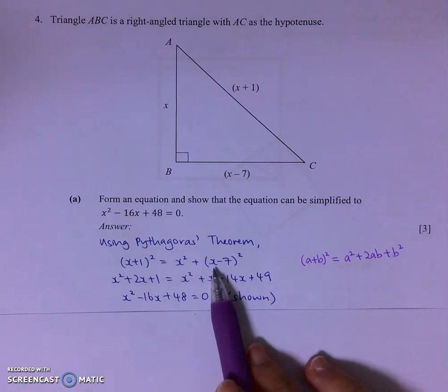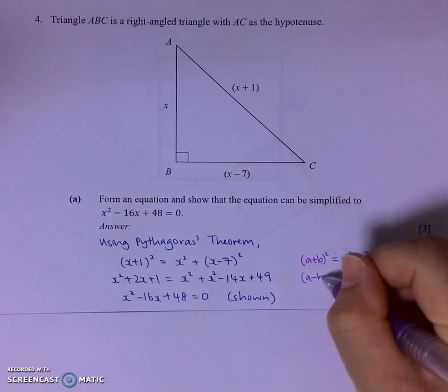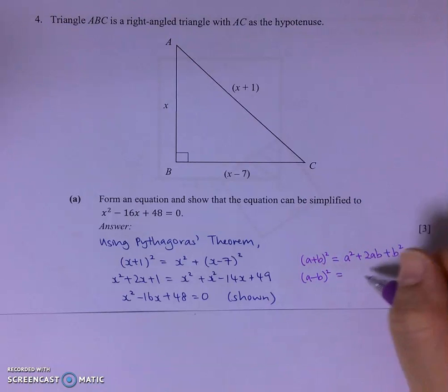As well as for X minus 7 squared, we will use A minus B squared equals to A squared minus 2AB plus B squared.